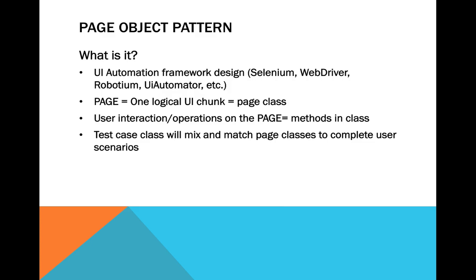For example, Selenium exposes APIs like finding an element by ID or XPath, and you can input text to a text field or click a button — button-clicking events and so on. So it doesn't really have a business aspect; it's a pretty generic API. By having the Page Object Pattern in your UI Automation Framework, you can add a business aspect to it.